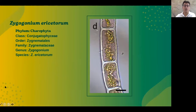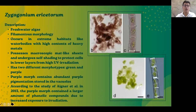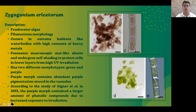Next is Zygogonium ericetorum. They belong in the same phylum, class, order, and family as the Spirogyra species, but differ in genus, belonging to genus Zygogonium. Zygogonium ericetorum are freshwater algae with filamentous morphology. They occur in extreme habitats like water bodies containing high contents of heavy metals, and they have macroscopic mat-like sheets and undergo self-shading to protect cells in lower layers from high UV irradiation. They have two morphotypes: green and purple. The purple morphotype contains abundant purple pigmentation stored in the vacuoles, and according to a study by Aigner et al. in 2013, the purple morph contained a larger amount of phenolic compounds due to increased exposure to irradiation.